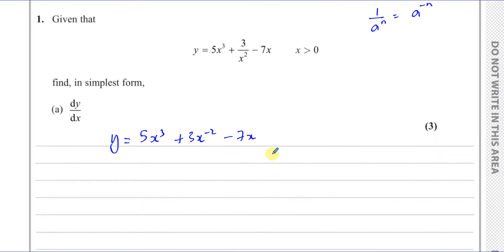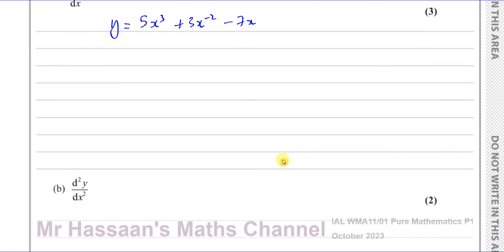Now it's ready to be differentiated. So when we differentiate this, we get dy/dx is equal to, multiply by the power, that's 15x squared, multiply by the power, take 1 from the power. Here multiply by the power, so you have minus 6x, take 1 from the power, so it becomes minus 3. And the x term, basically you just drop the x. It just drops because actually 7x to the power of 1, when you multiply by the power, you get 7, and when you take 1 from the power, you get x to the power of 0, which is just 1 anyway. So that's dy/dx.